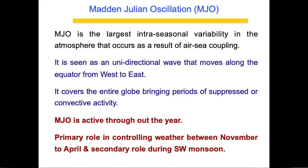Since the ocean is warmer, it interacts with the atmosphere, resulting in this oscillation that we call Madden-Julian Oscillation. It was named after the two scientists who first noticed this kind of variability in the atmosphere. It is seen as a unidirectional wave that moves along the equator from west to east — so it has an eastward movement.